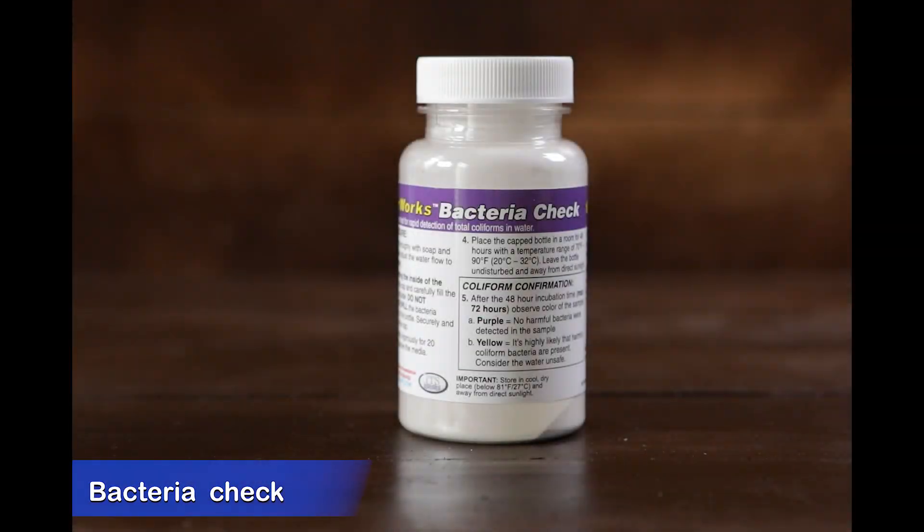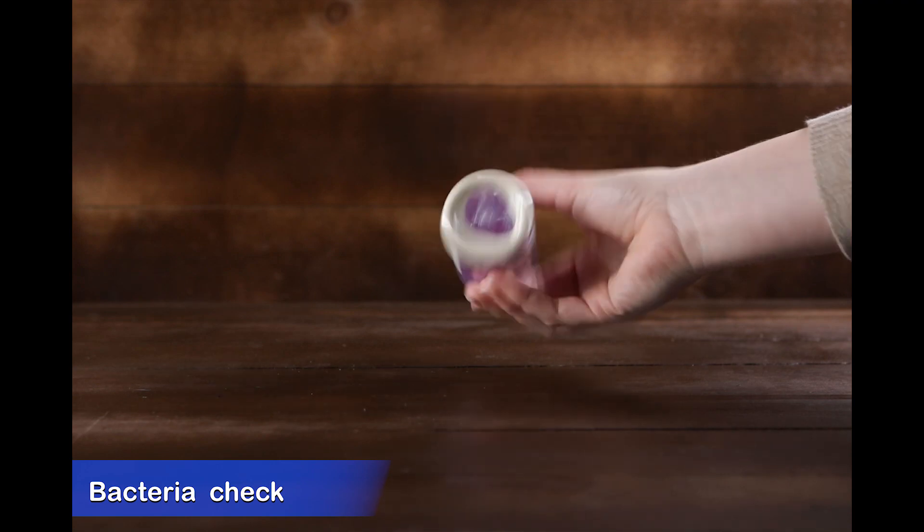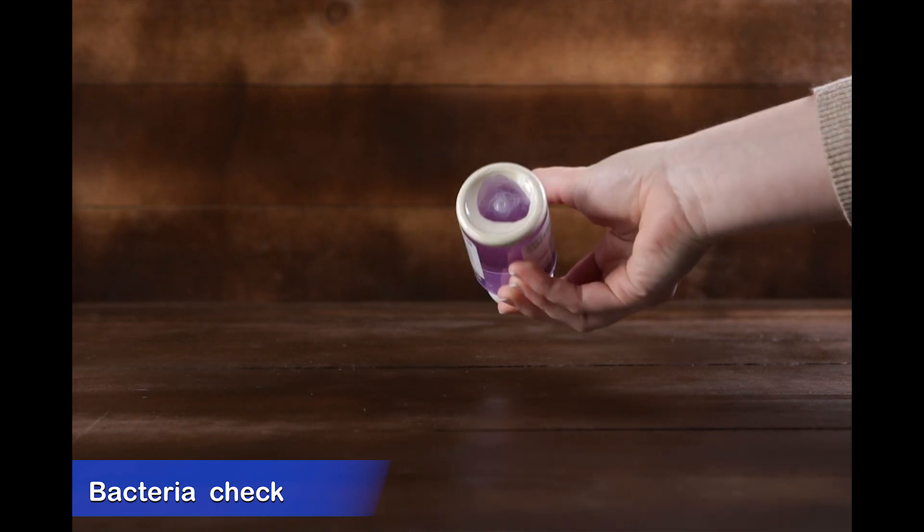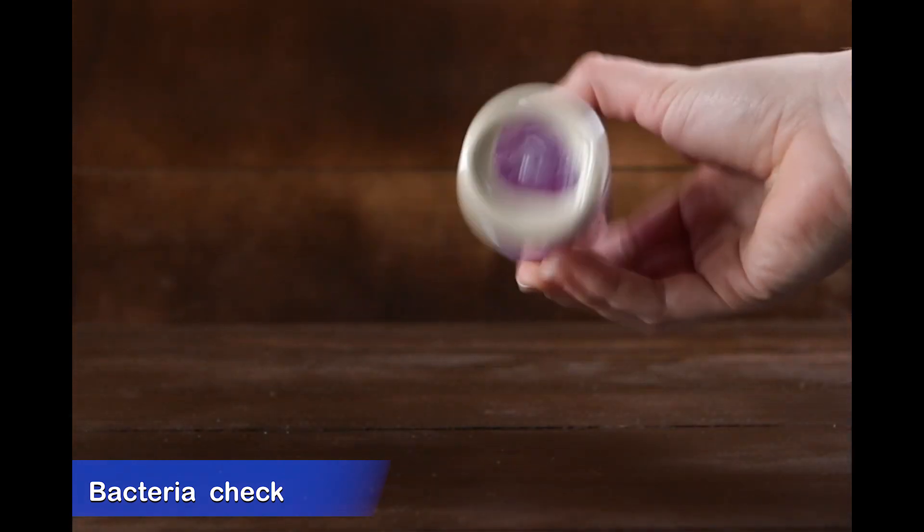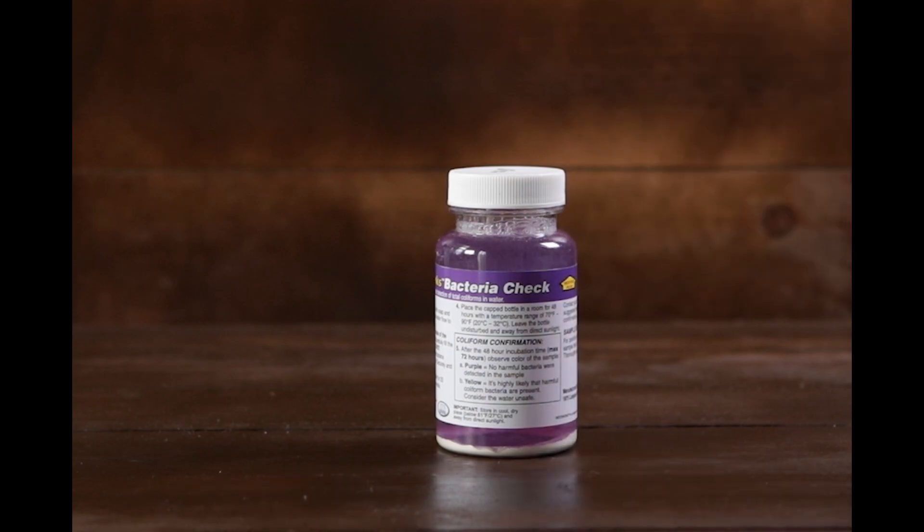Test for bacteria by filling the jar to the shoulder with water. Cap and shake for 20 seconds. Place the jar in a room with a minimum temperature of 70 degrees. The jar should remain undisturbed and out of direct sunlight for 48 hours.